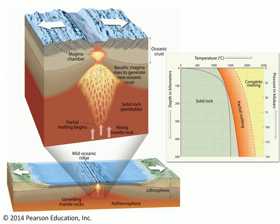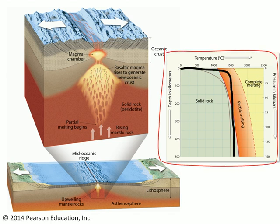Let's examine a couple of tectonic situations where this might occur. The first is at an oceanic ridge where we see divergence producing decompression melting of the underlying mantle. Looking at our diagram, what's happening is that we have changed the geothermal gradient — so instead of being relatively cold at a given depth, it's relatively warm at that same depth — and so magma is being produced in that zone.